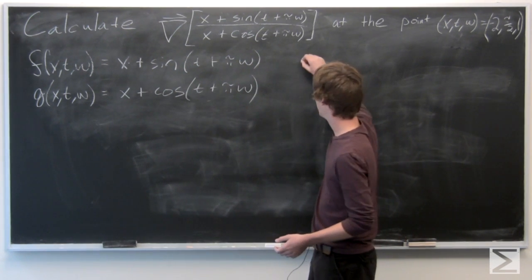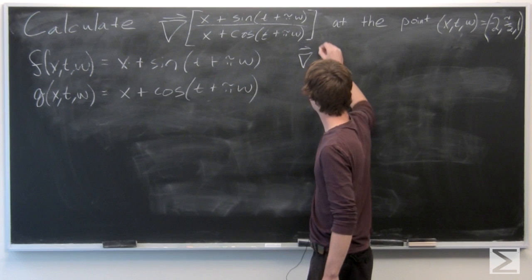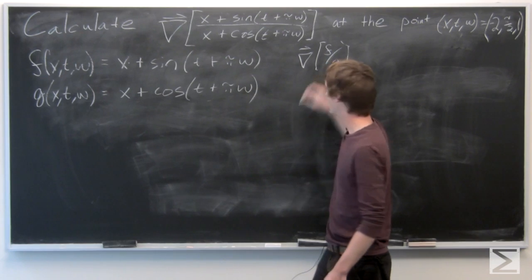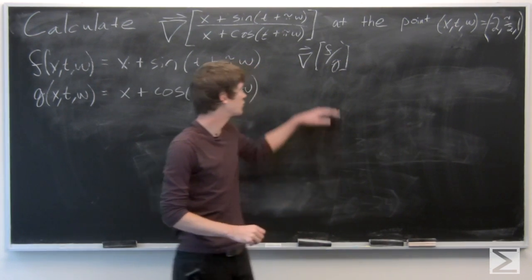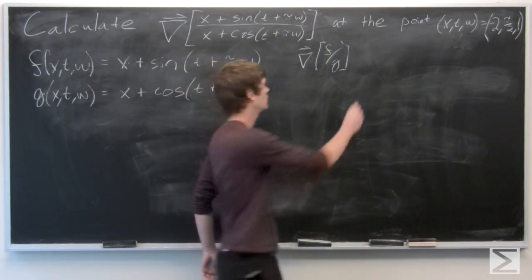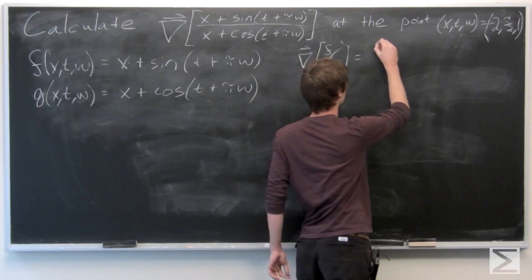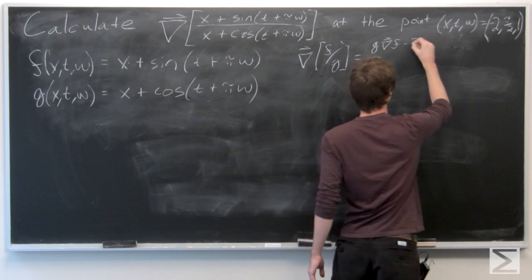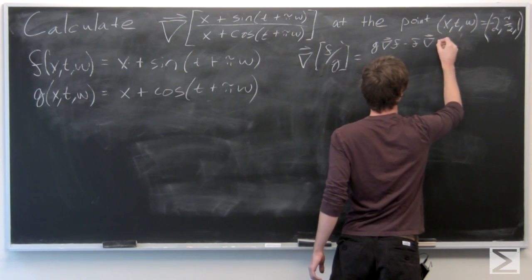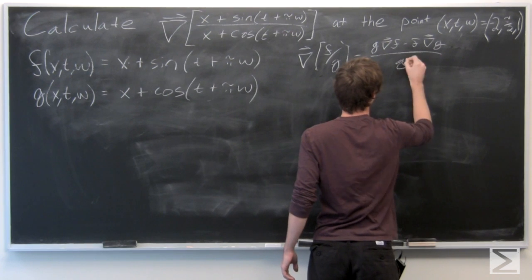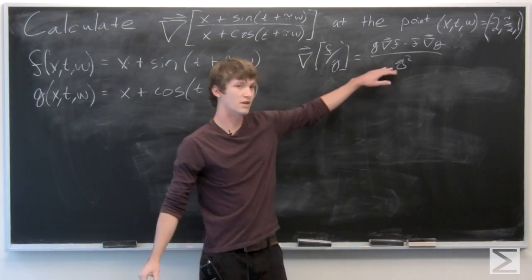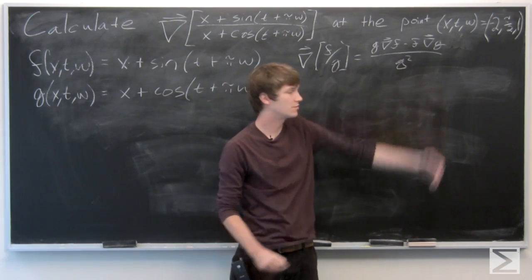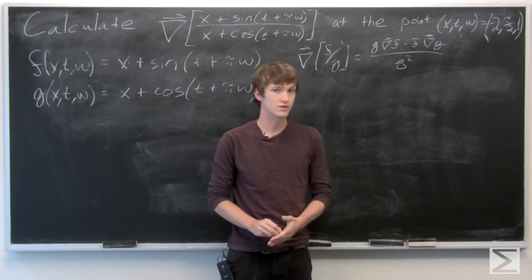Now we just want to calculate the gradient vector of f over g, which we know using the quotient rule is given as g times the gradient vector of f, minus f times the gradient vector of g, all over g squared.